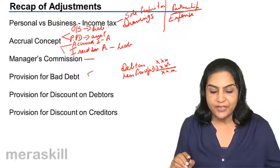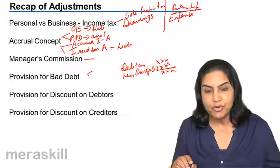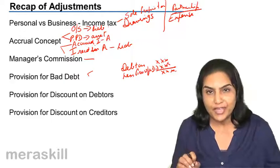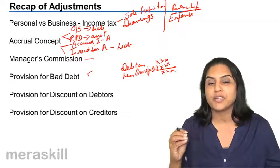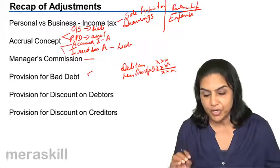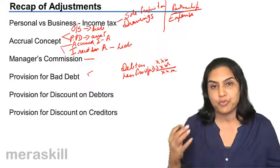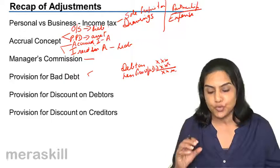Similarly, we have something called a provision for discount on debtors. Discount on debtors is also an expense. When we expect some of the debtors to avail of a discount in future, we may as well provide for this loss, this future expense.